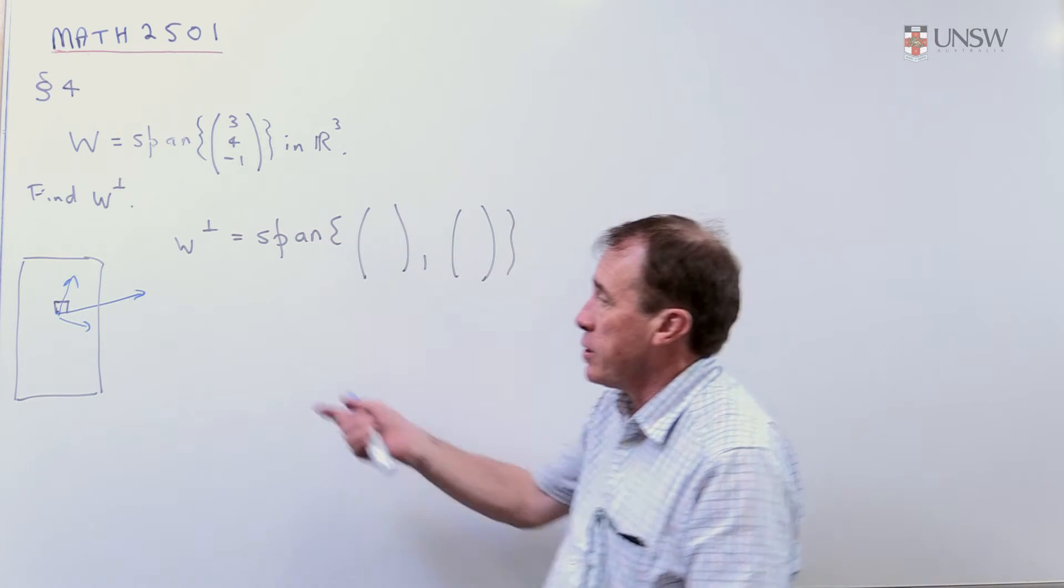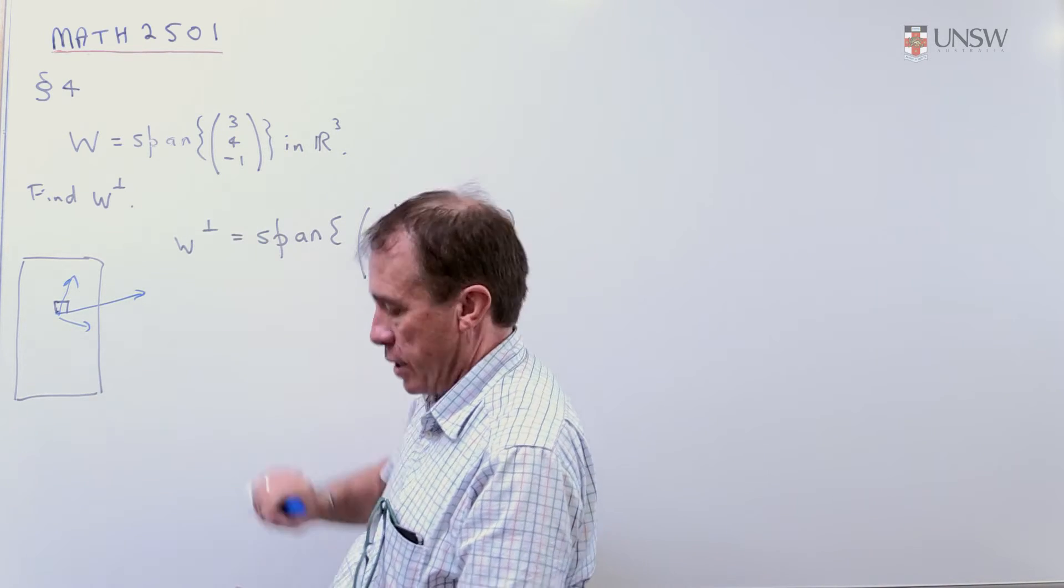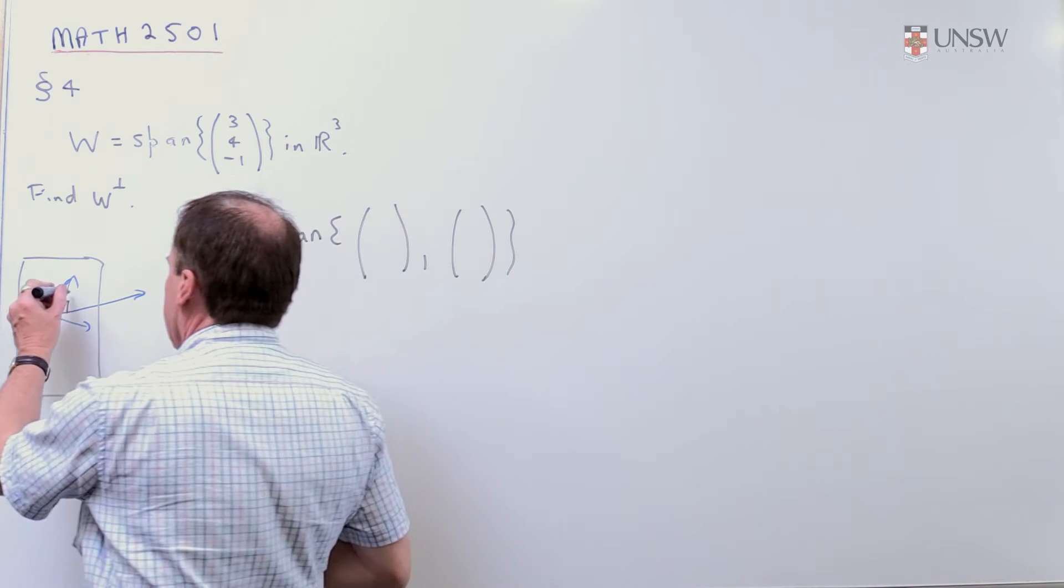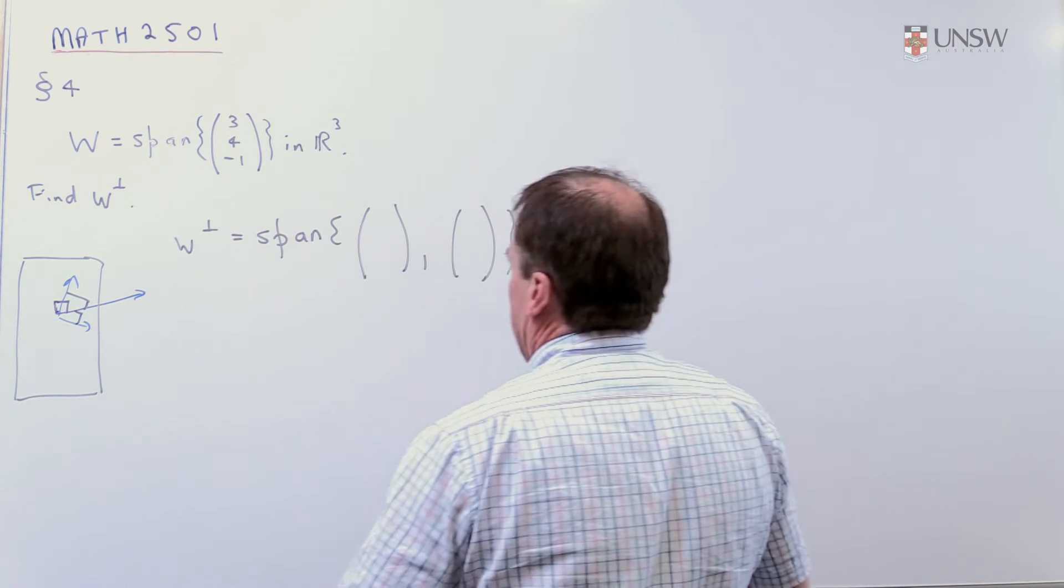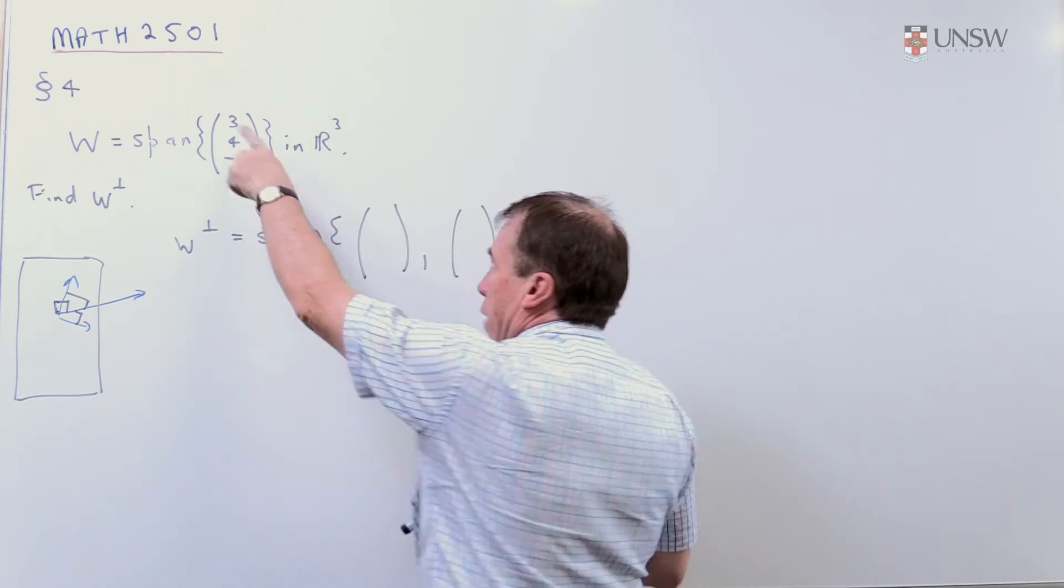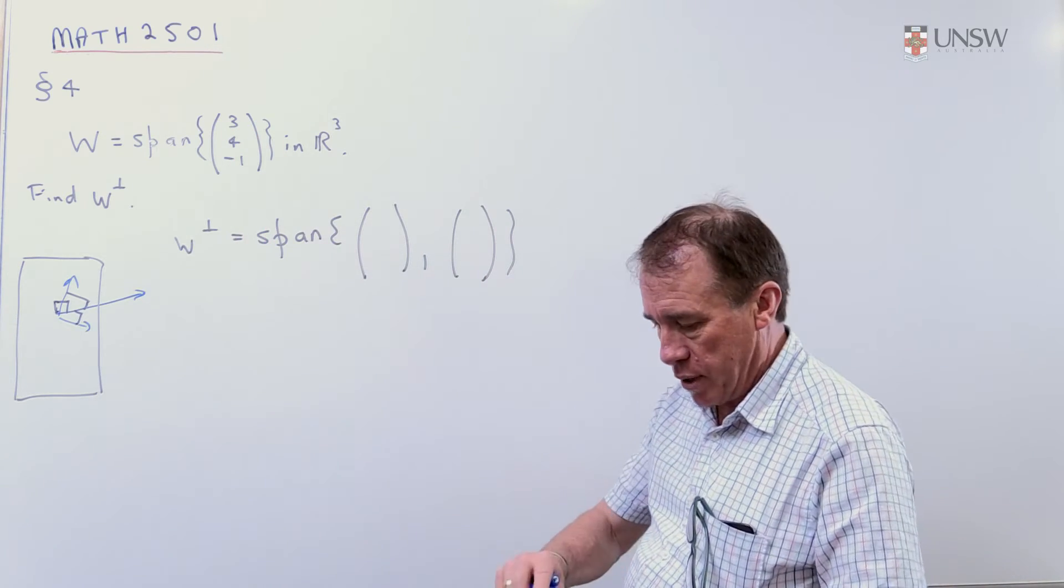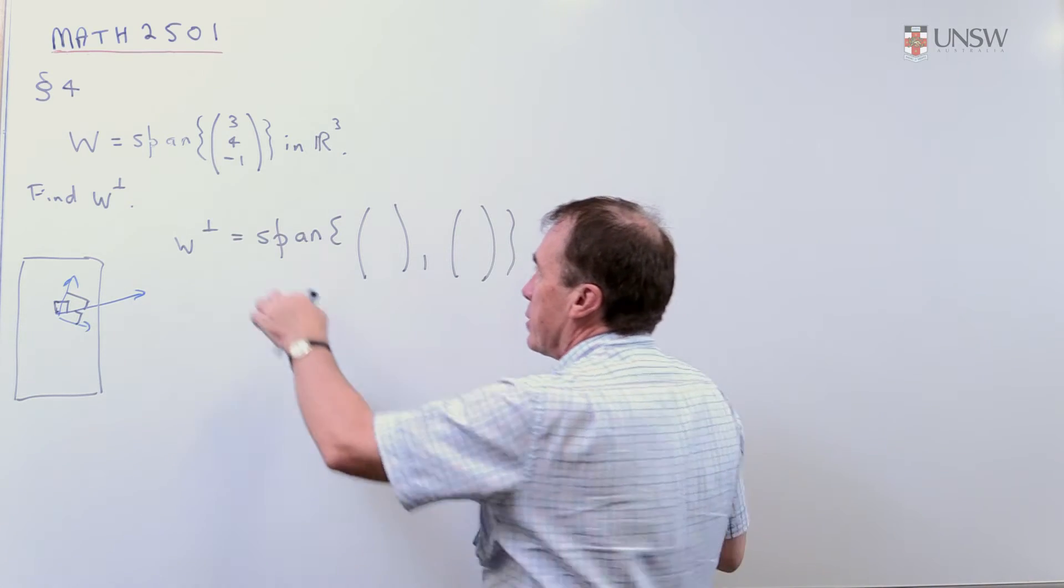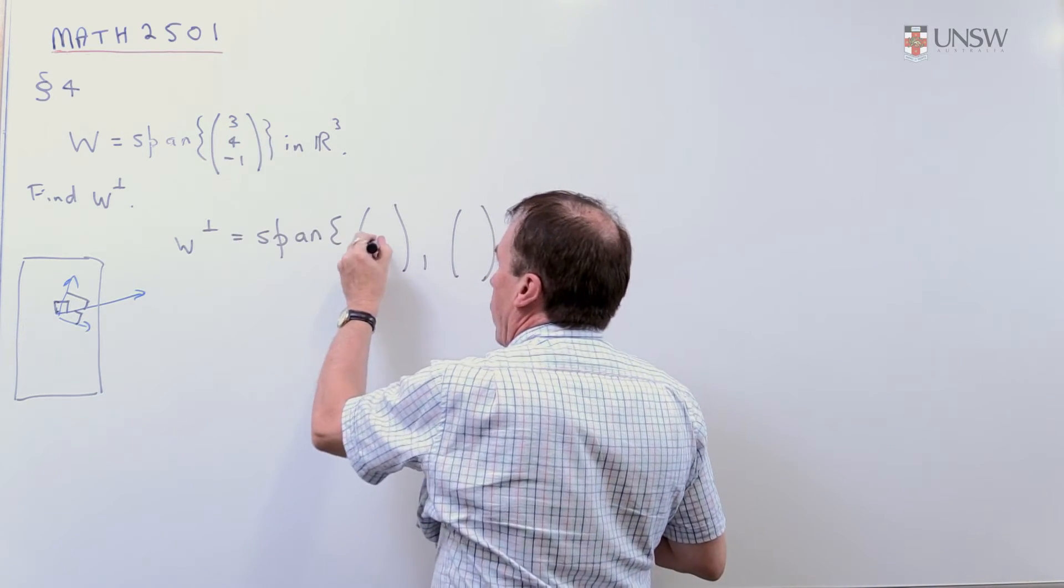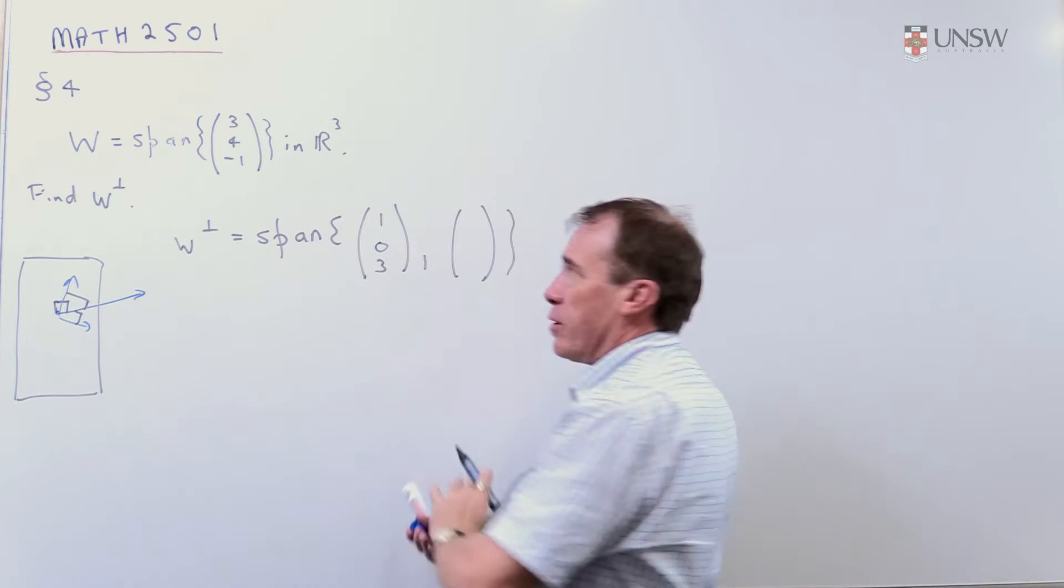We know that vectors are at right angles if the dot product is zero. So I want a right angle there and a right angle there. The dot product is zero, so I've just got to cook up two vectors that are perpendicular to this one. I'll do that by pure thought without any serious calculations. If I kill the middle one and take one of those and three of those, that will work.